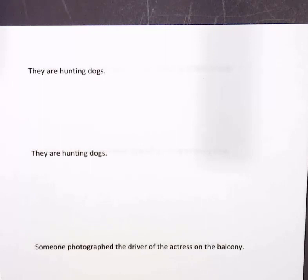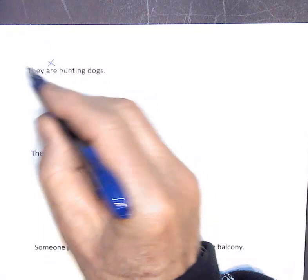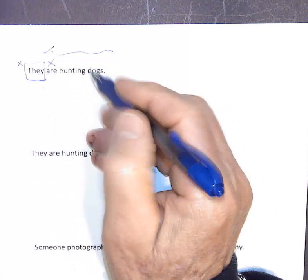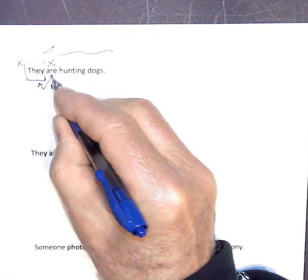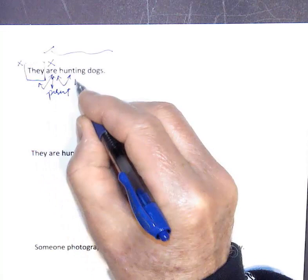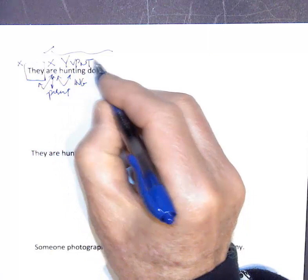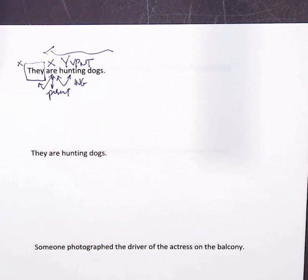'They are hunting dogs.' The first interpretation: 'R' (are) is the X-word, 'they' is the subject, and 'R' ties with present and with the verb 'hunting' in its -ing form — verb phrase with no time. This means that some people are out trying to catch or hunt dogs.